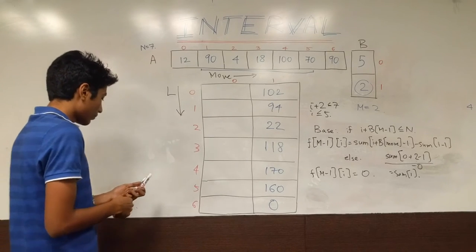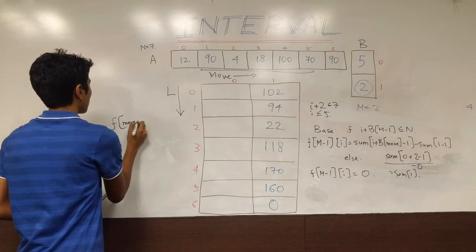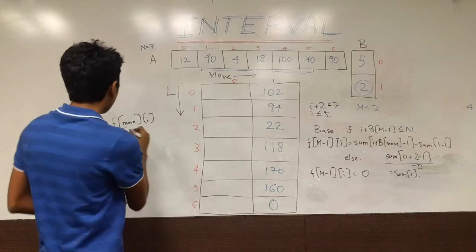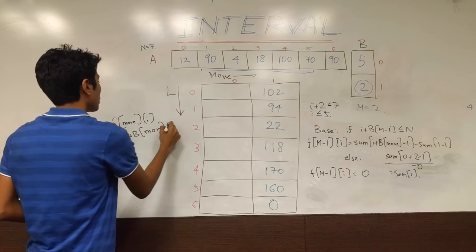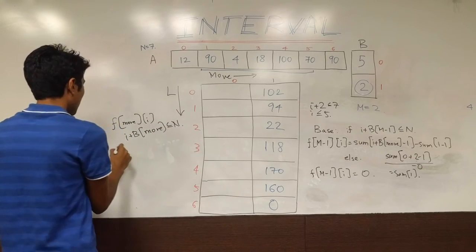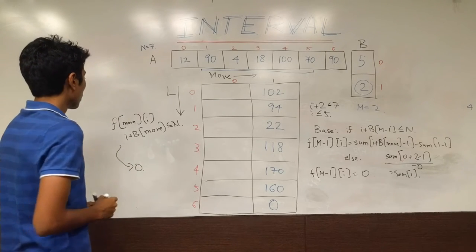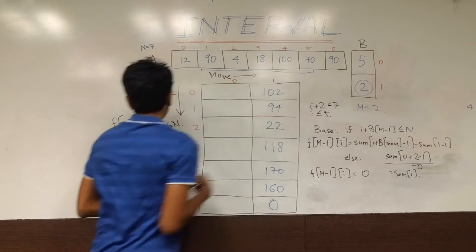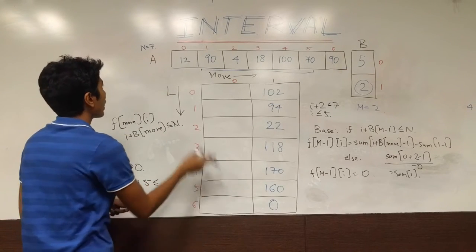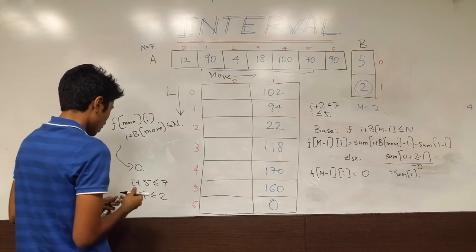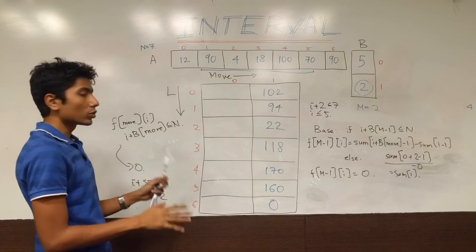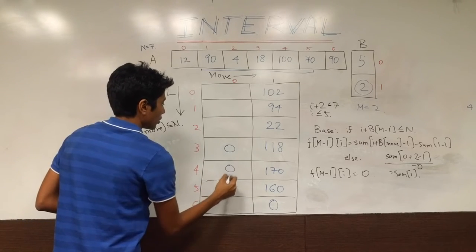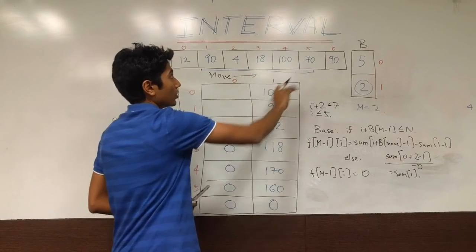So now our base conditions are complete. However any time that you have f of any move and i, if i plus b of move should be less than equal to n for you to process it at all, otherwise you just set it to 0. So over here we are taking a move back. We are going at move number 0. b of 0 is 5. So i plus 5 less than equal to n which is 7. So i should be less than equal to 2. For the first move i should be less than equal to 2 for you to process it. 3, 4, 5, 6 will have value 0. For the same reason why there is 0 over here. You can't take a subarray which is less than the required length.